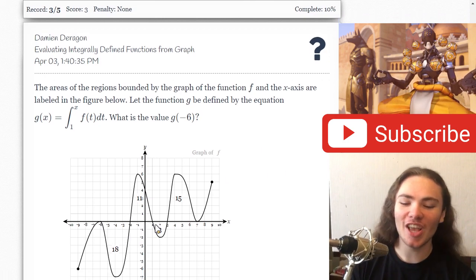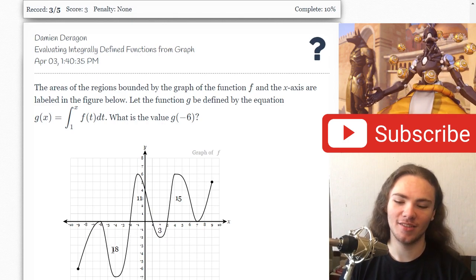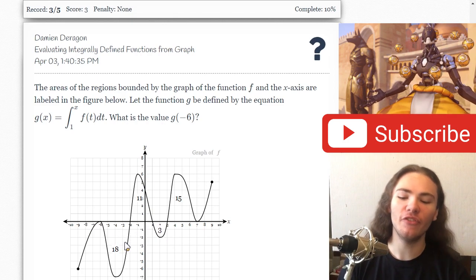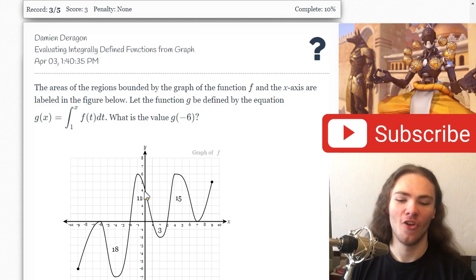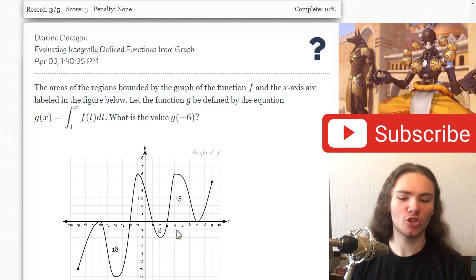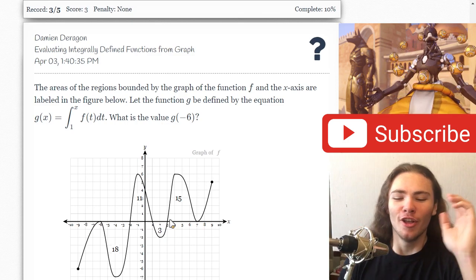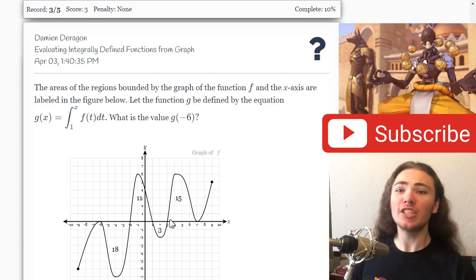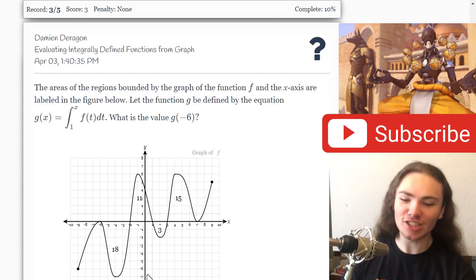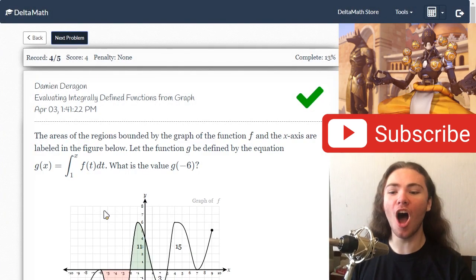So we've got negative 6. We've got 1. And now if I do the math, that's 18. Negative. There's an 18. Minus 11. Plus. Actually, 3 is outside the bounds. Negative 8. Positive 18. Minus 11. Which ends up being 7, guys. That's the first 7 we've gotten on the stream. And that's a win. That's 2 dubs in 1.